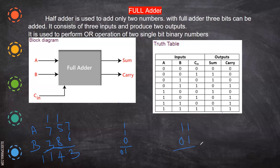Suppose you have binary numbers to add. The first two digits — the lowest bits — are two digits: one plus one is zero and you have a carry. So that carry is taken as a third digit: one plus one plus zero is zero again, and you have another carry. If you have another bit, this carry goes there and is added as a third bit. That is what C represents.